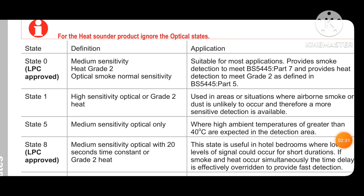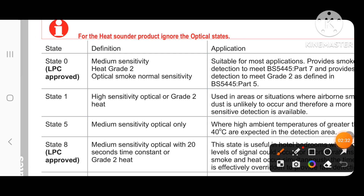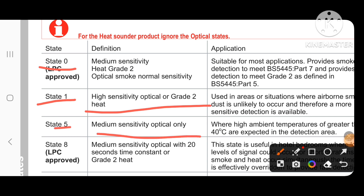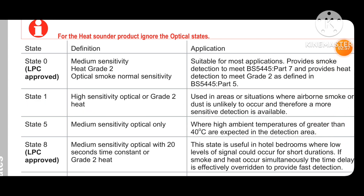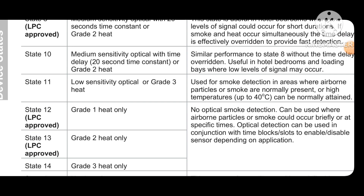State 0 is suitable for applications and provides smoke detection. State 1 is high sensitivity optical, grade 2. State 5 is medium sensitivity optical.